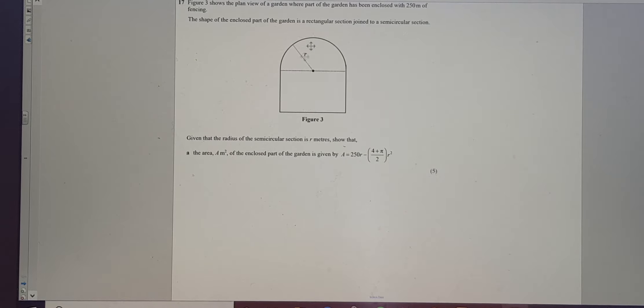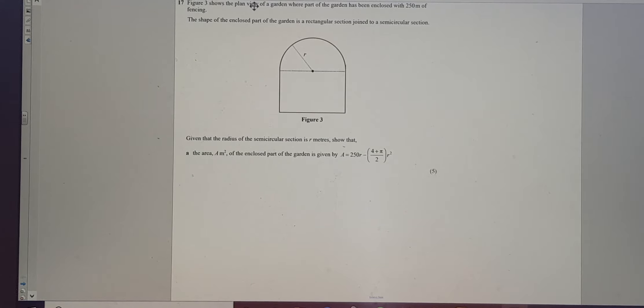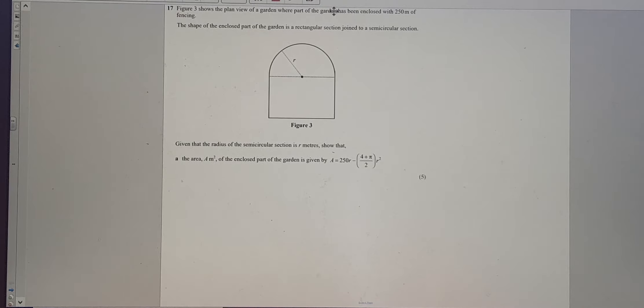Figure 3, this one here, shows the plain view of a garden where part of a garden has been enclosed with 250 metres of fencing. So this is the garden, the enclosed bit, and 250 metres is the distance around the outside, i.e. the perimeter of it.